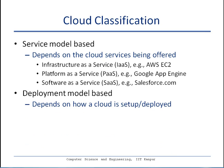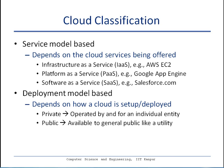The second classification method is the deployment model — how a vendor or enterprise sets up or deploys a cloud platform. The first deployment model is a private cloud, where the cloud infrastructure is operated by and for an individual entity, for example a university setting up a private cloud within its campus. The second is a public cloud, where somebody sets up a cloud and sells it as a service — for example Amazon Web Services and Rackspace — available to the general public as a utility.